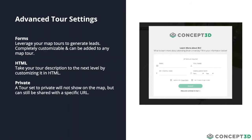Lastly is our private setting. This is ingrained in different areas of our mapping platform. It basically gives you the ability to hide a tour from the embedded map on your website or main front-end map, while still having the ability to share it through a custom URL.